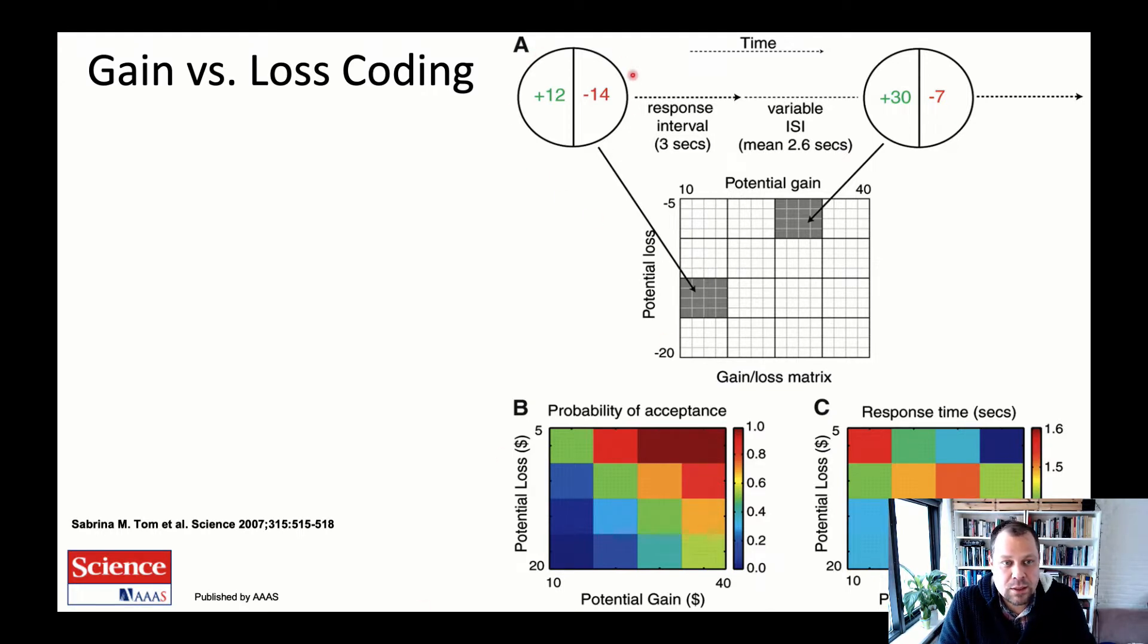What the authors did is they presented these lotteries to participants in the scanner, and the lotteries offered some gain amount and some loss amount. These were shown for three seconds, and subjects then chose whether to accept the lottery, which means they had a 50-50 chance of gaining this amount or losing this amount. If they rejected the lottery, then there would be no change to their status quo. The interesting thing in this experimental design is that they went through a number of potential losses ranging from minus 5 euros to minus 20 euros, and a number of potential gains from 10 to 40 euros.